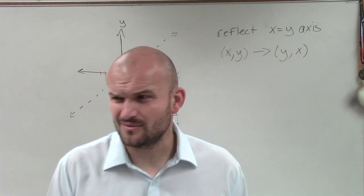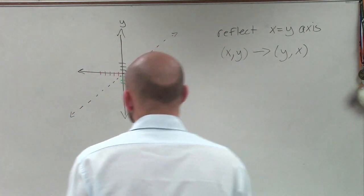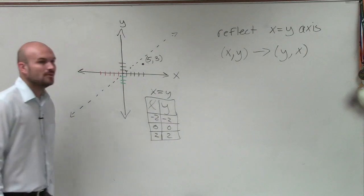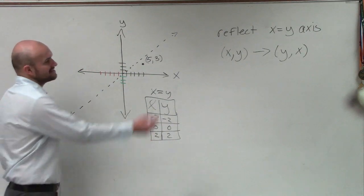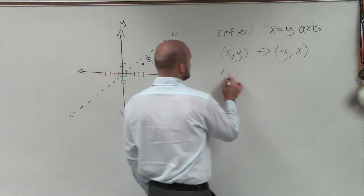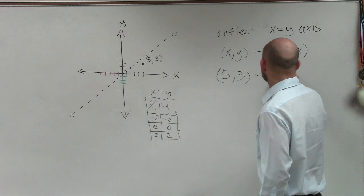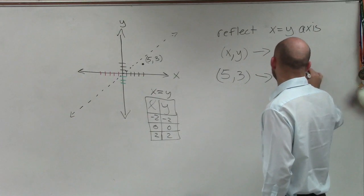You might say, what? What is this doing? How do you do this? So what I'm trying to say here is if I have my point is 5 comma 3, all right, then if I want to reflect this, it's now going to be 3 comma 5.